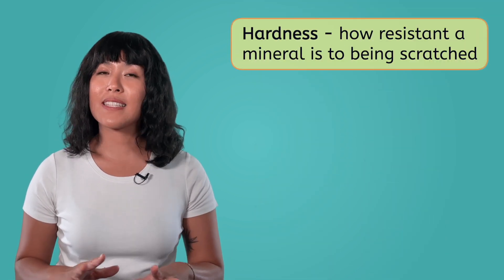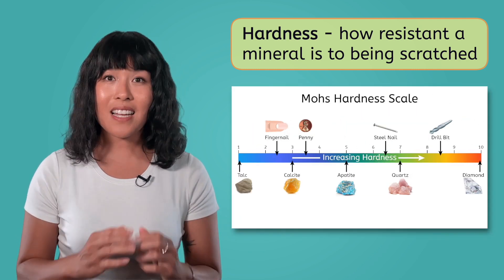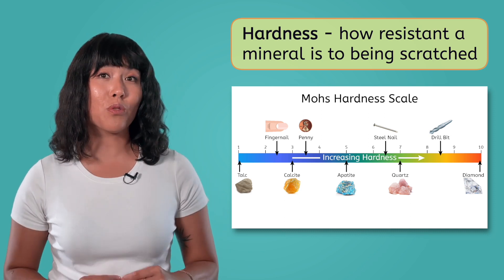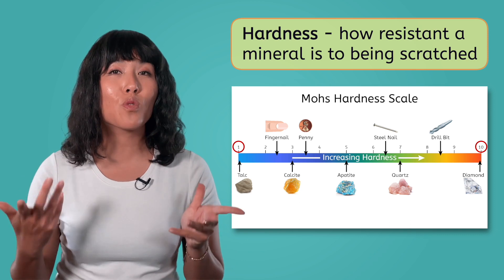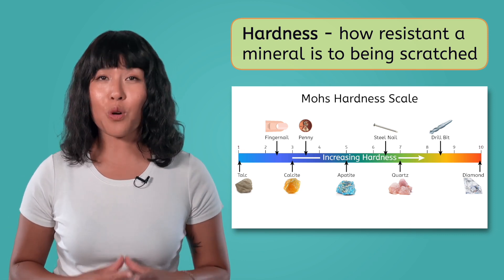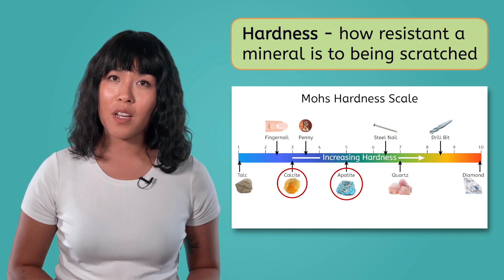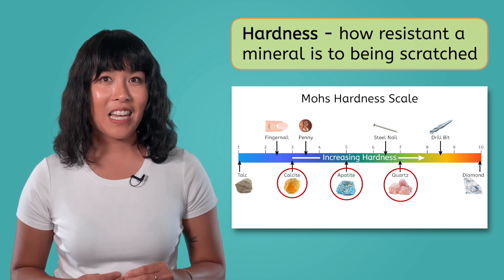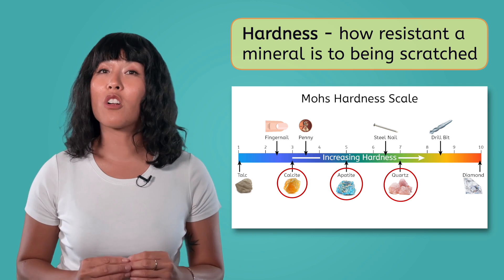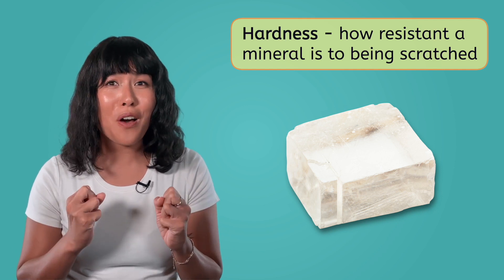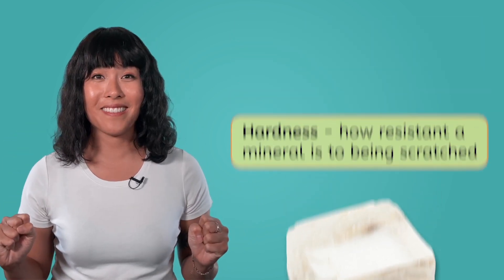I think we're getting close to identifying them. Let's check out one last property: their hardness. A mineral's hardness is how resistant it is to being scratched. Scientists use a tool called the Mohs Hardness Scale to rate the hardness of minerals from 1 to 10. The higher a mineral is on this scale, the harder it is to scratch. So for example, a mineral with a hardness of 3 couldn't scratch one with a hardness of 5, but a mineral with a hardness of 7 could — it could scratch any mineral with a hardness level lower than 7. Wow, one of our mystery minerals is so soft I can scratch it with my fingernail!